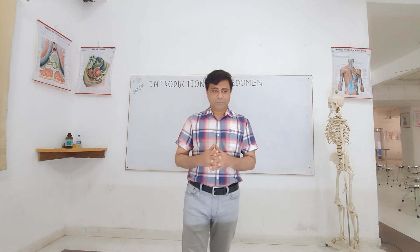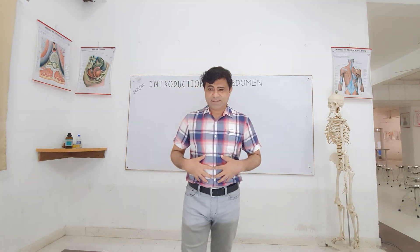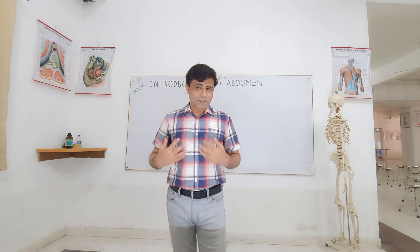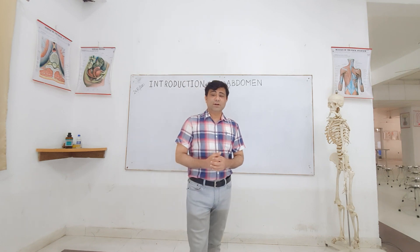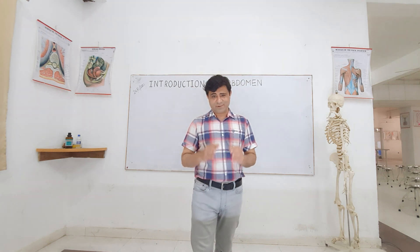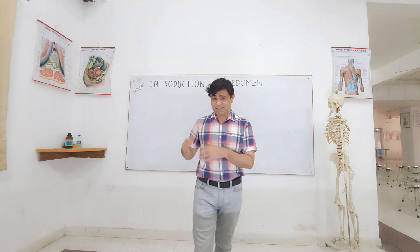The third F is for fluid — in conditions like ascites and nephrotic syndrome, an enormous amount of fluid collects in the peritoneal cavity, causing bulging not only anteriorly but also fullness of the flanks on the sides.